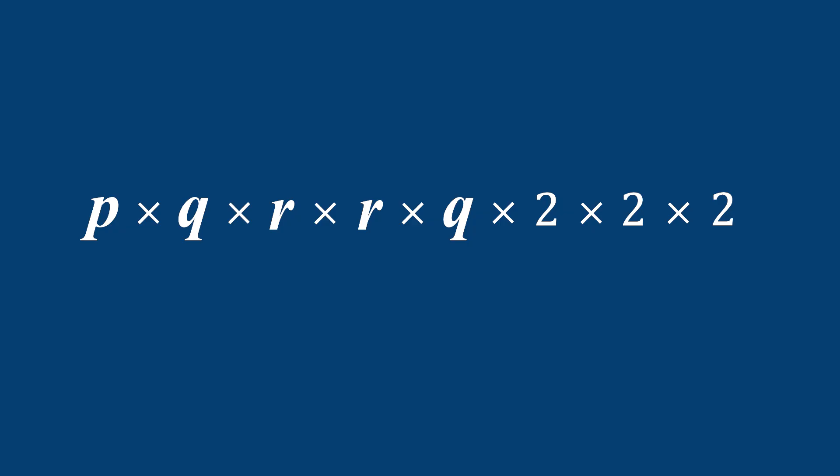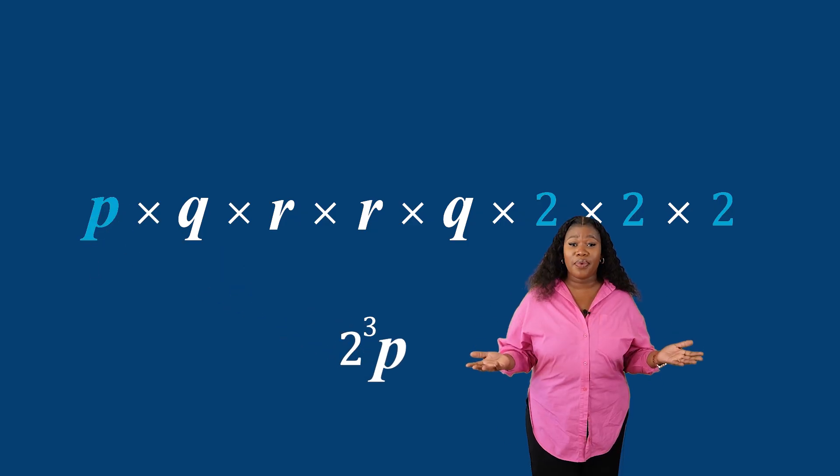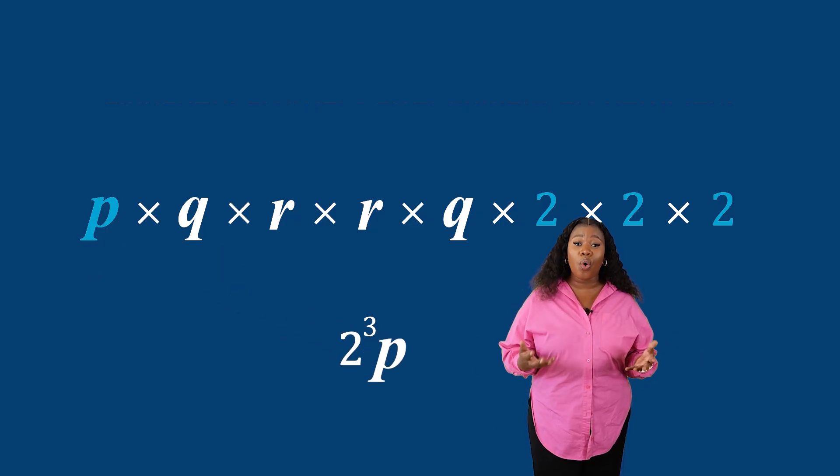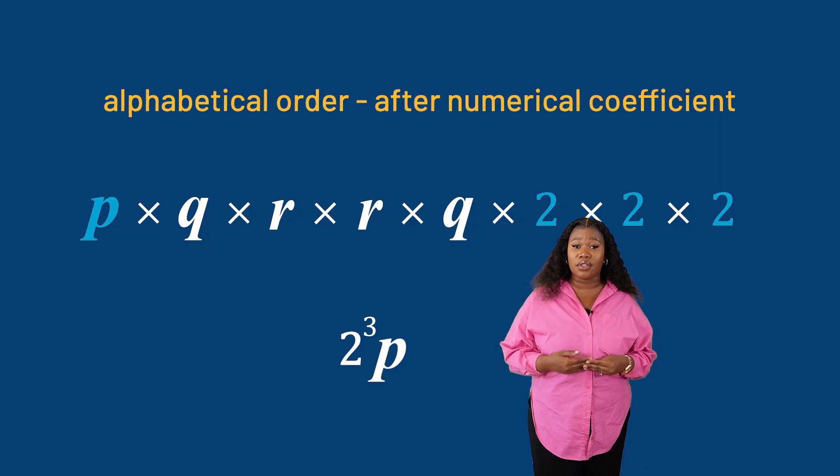All right, let's check it step by step. Let's group the factors. The base 2 appears three times, so we write 2 to the power of three. The base p appears once, so we write p. Remember grade nines, in algebra, we always write the letters in alphabetical order after the numerical coefficient.